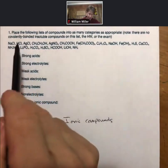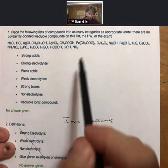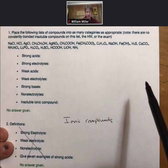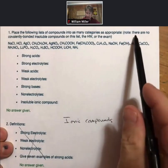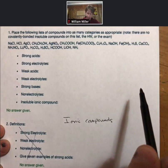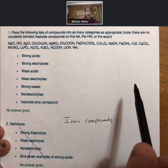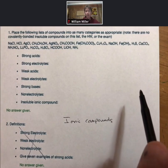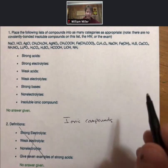I'd like to work through classifying this list of compounds into as many categories as appropriate. Note there are no covalently bonded insoluble compounds. That means the only insoluble compounds are going to be compounds that we find on our solubility list to be insoluble.